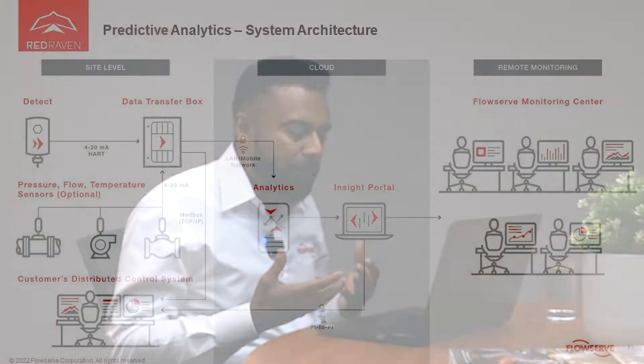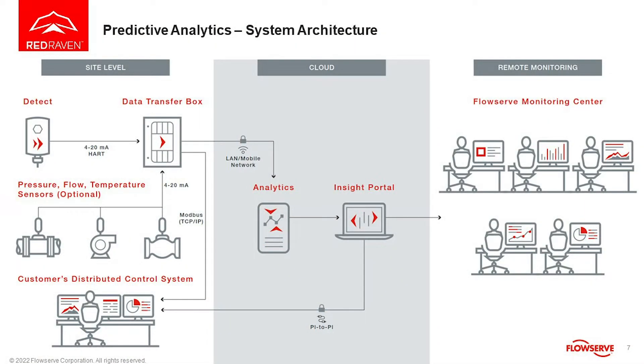In predictive analytics, which covers 20% of the critical assets we recommend, we use wired sensors. To predict what's going to happen, we need information well ahead of time with a lot of data at our fingertips to understand exactly what's going on and how much time we have to take action.